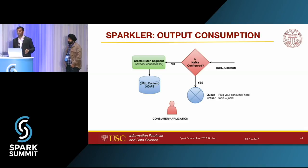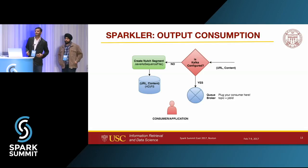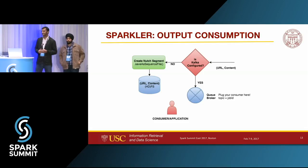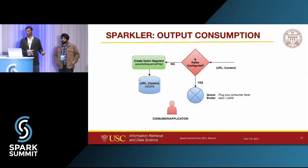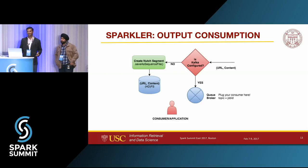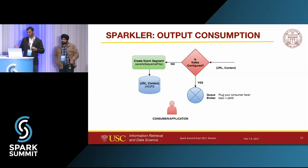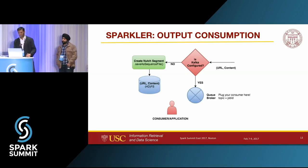From our previous crawling experience, we understand that crawling is just one component in a system — there could be many advanced machine learning pipelines following the crawler. So we made it easy to integrate. You can configure Kafka and subscribe to a Kafka topic, and the crawler starts producing content into Kafka so you can do additional analysis in your pipeline. If Kafka is not required, it can fall back to Nutch mode where it produces sequence files compatible with Nutch format.